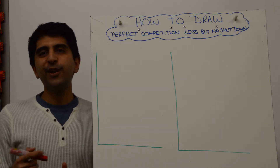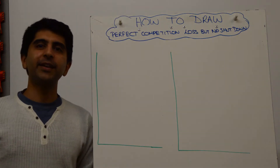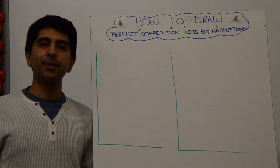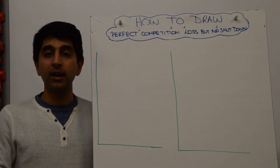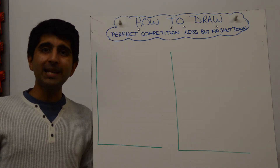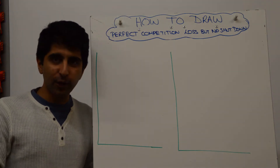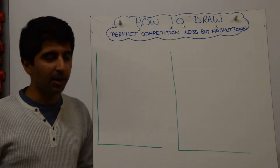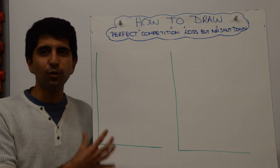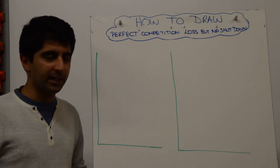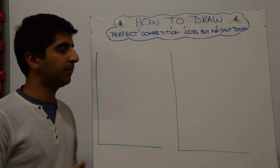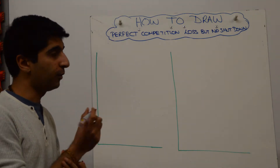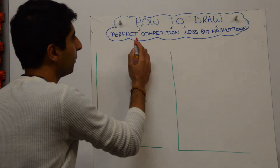Hi everybody. A lot of you will know of the shutdown condition when it comes to perfect competition — whether firms should stay in the market if they're making a loss or whether they should leave the market. But can you draw that diagrammatically? Can you construct the diagram? Let's go through how you do that.